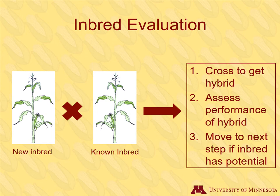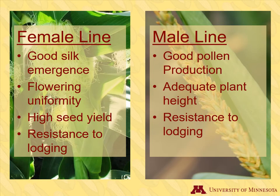Good inbreds, also called elite inbreds, have the best potential to make good hybrids. Hundreds of thousands of inbred lines have been developed since the beginning of hybrid production, but very few have ultimately been used to develop hybrids. Inbreds perform weakly, but there are still qualities that breeders need them to have. Corn breeders want inbreds serving as the female line to have good silk emergence and flowering uniformity, high seed yield, and resistance to lodging. While male inbred corn lines need to have good pollen production from the tassel, adequate height, and resistance to lodging.